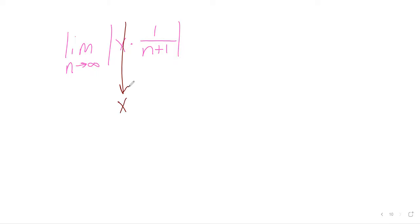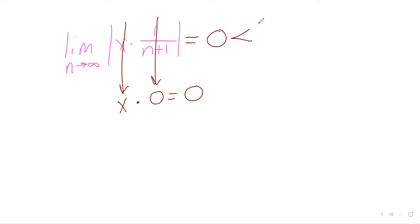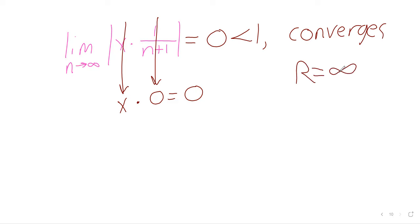We'll multiply by the reciprocal. We get x to the n plus 1 over x to the n times n factorial over n plus 1 factorial. X to the n plus 1 over x to the n is x. N factorial over n plus 1 factorial is 1 over n plus 1. Now n is going to infinity and x is staying x, and this expression is going to 0. Any number times 0 is 0, so this limit is 0. Zero is less than 1, so this series converges for every value of x — we're in the first case with an infinite radius of convergence.